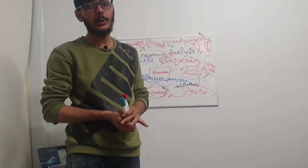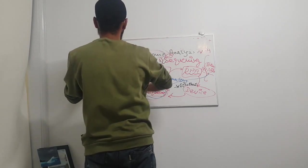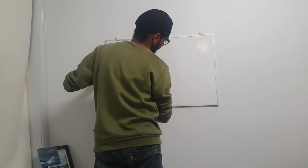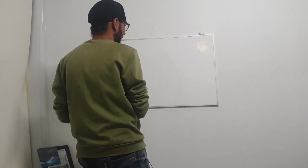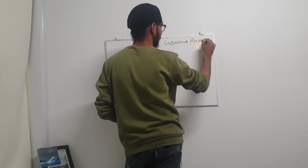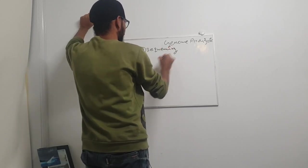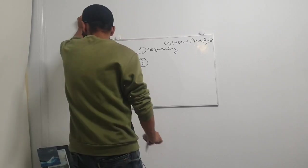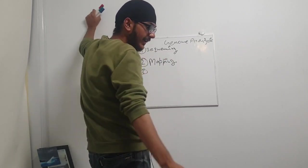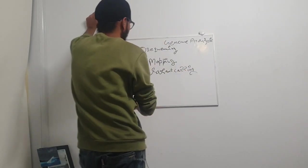This is what genome analysis is. Let's sum up this lesson. What we have learned is genome analysis and how we do it. Number one is sequencing. Number two is mapping. Number three is variant calling. Number four is scientific discovery.